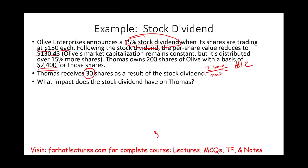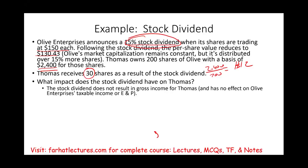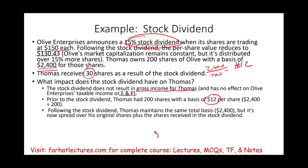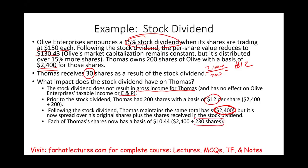The stock dividend does not result in gross income. It has no effect on Olive Enterprises' taxable income or earnings and profits. Prior to the dividend, Thomas' basis was $12 per share. Following the stock dividend, Thomas maintains the same total basis of $2,400 but now owns 230 shares instead of 200. We take $2,400 divided by 230 shares, giving a new basis of $10.44 per share.